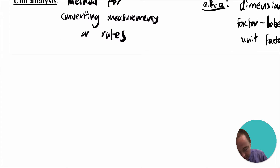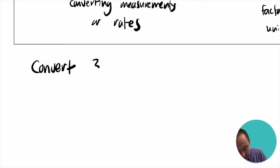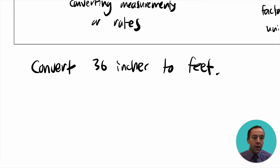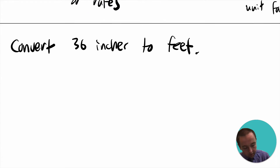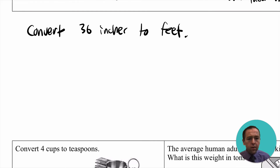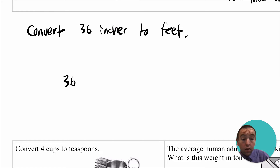Let's say we were supposed to convert 36 inches to feet. This is a very common measurement conversion in the United States. The answer is supposed to be three feet, because one foot is equivalent to 12 inches and 12 goes into 36 three times. The way we do this using unit analysis is to start with the measurement we have — not only the number but also the label. So I'm going to write 36 inches.